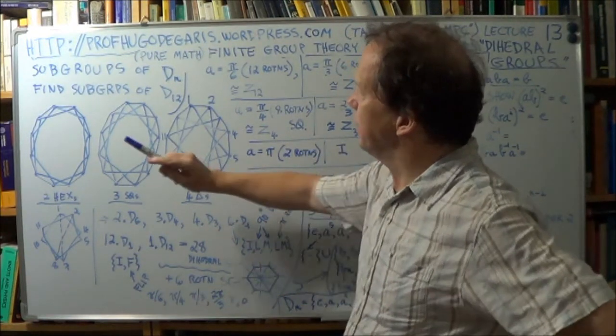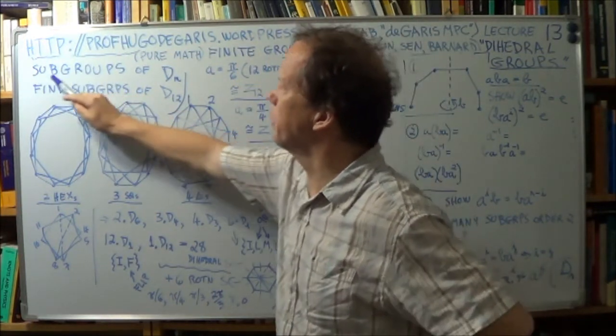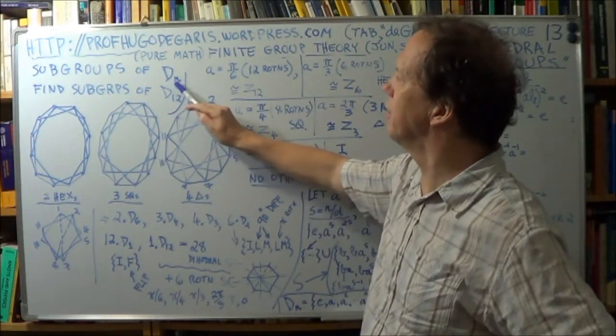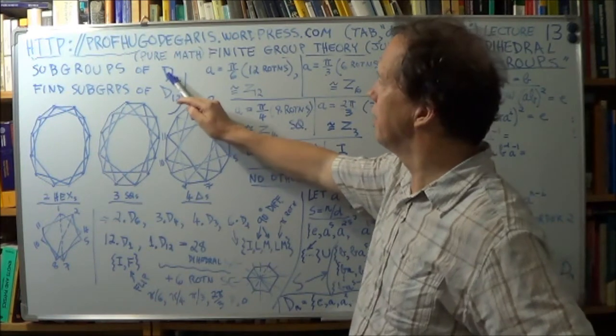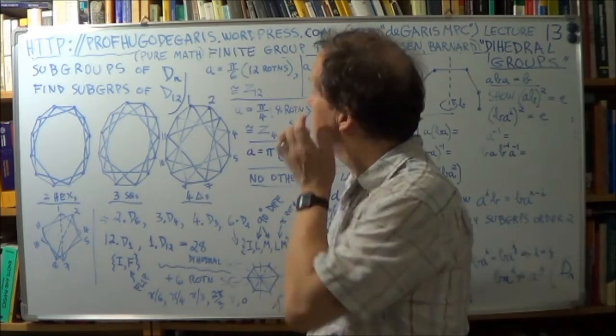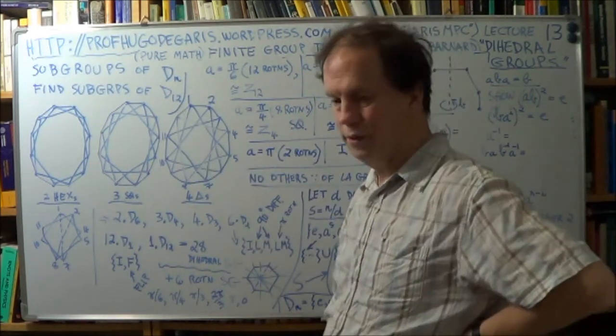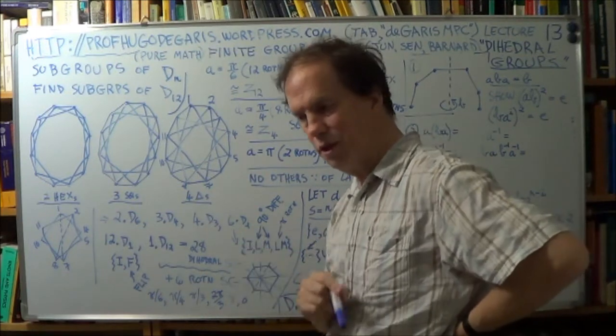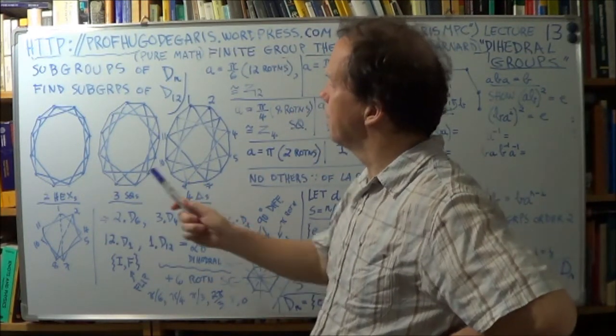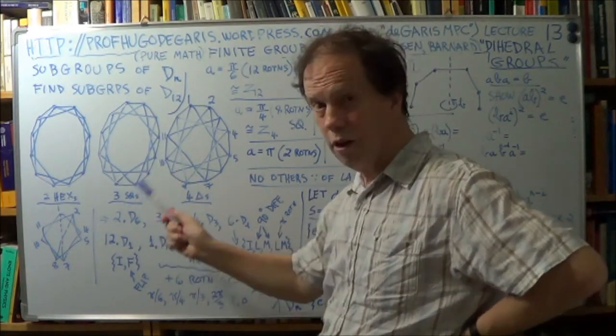Right, so before we get on to talking about the subgroups of the general, for general N dihedral group of N sides in your regular polygon, let's do it for 12, where this number N here is large enough to be interesting. You get interesting phenomena coming up.